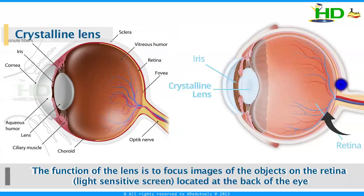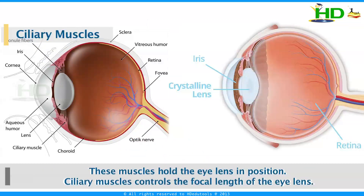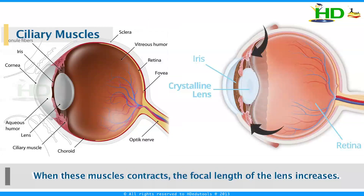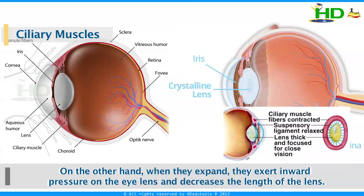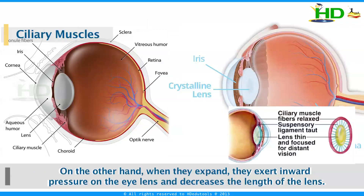The retina is the light-sensitive screen located at the back of the eye. The ciliary muscles hold the eye lens in position and control the focal length of the eye lens. When these muscles contract, the focal length of the lens increases. On the other hand, when they expand, they exert inward pressure on the eye lens and that decreases the focal length of the lens.